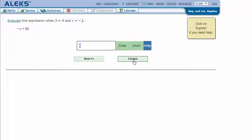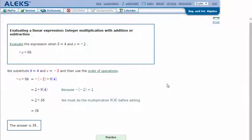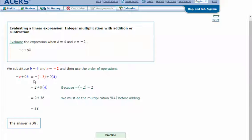Let's click Explain. We substitute b equals 4 and c equals negative 2, and then use the order of operations. So we have the opposite of c plus 9 times b. And so here we read this as the opposite of negative 2 plus 9 times 4.